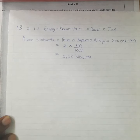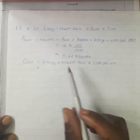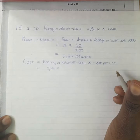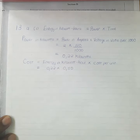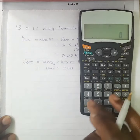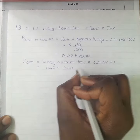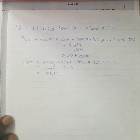Now that we have calculated the power, we need to calculate the cost. We say energy in kilowatt hours times cost per unit. The energy is 0.22 kilowatt hours times the cost per unit of 0.50. So 0.22 times 0.5 gives us 0.11 dollars, which means 11 cents. That is the cost of running the electric heater for one hour.